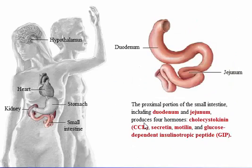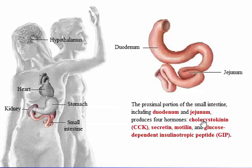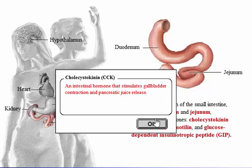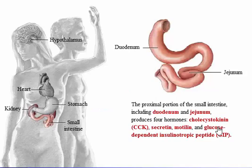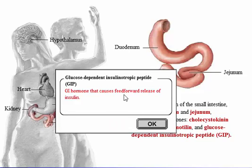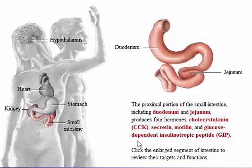The proximal portion of the small intestine, including the duodenum and jejunum, produces four hormones: secretin, cholecystokinin (CCK), and glucose-dependent insulinotropic peptide (GIP). Click the enlarged segment of intestine to begin the review of their targets and functions.